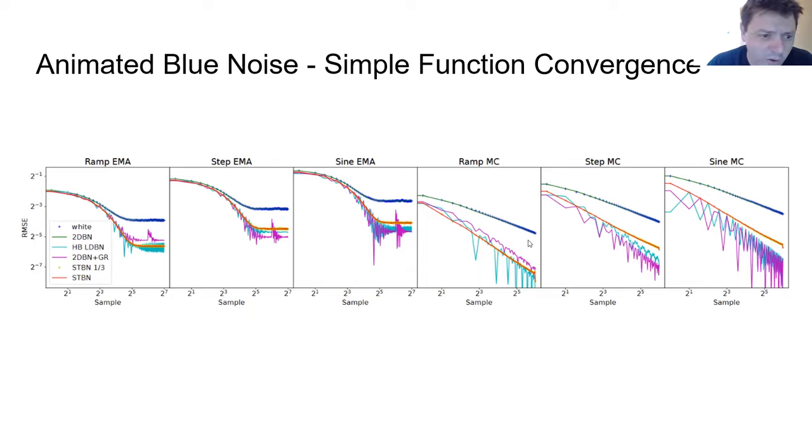And purple and teal are the low discrepancy based noises. And so purple and teal often can do better than us in convergence but they're more temporally erratic and as we saw before they're lower quality spatially. And so we feel like the right trade-off is at the lowest sample counts. You want the best spatial quality you can have and then on top of that any better convergence than white noise you can get. And so these graphs are showing that from the convergence point of view.